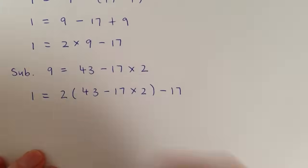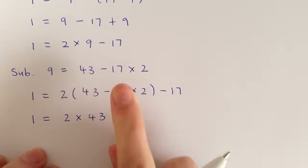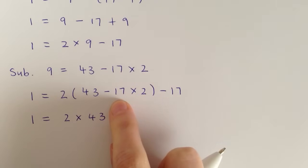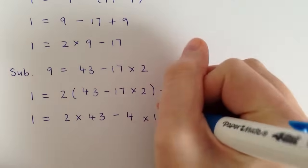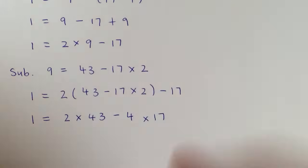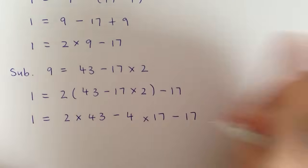And then we can just expand that one out. So we've got 2 times 43. And because this 17 is in the original equation, we want to keep it in terms of that 17. So we've got negative 17 times 2, and then times 2 again. So that is the same as saying negative 4 times 17. And then we also have this extra minus 17.